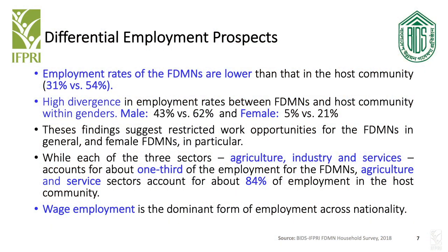This gap is really pronounced in the case of female workers: for FDMNs only 5% are actually employed, compared to 21% in the case of the host community. In terms of sector-wise distribution, we found that in the case of displaced nationals they are equally split — one-third each in agriculture, industry, and services by TEPF.